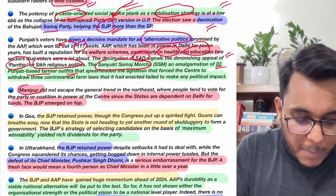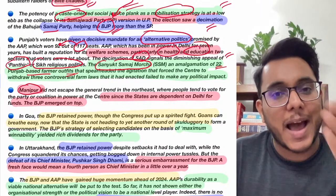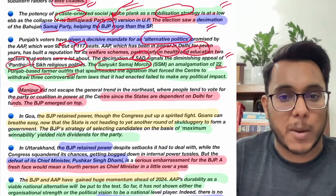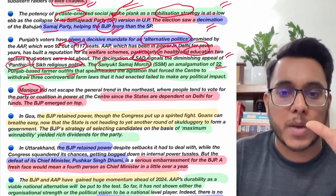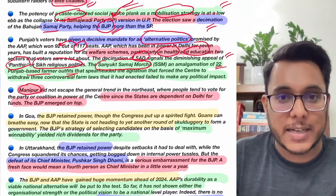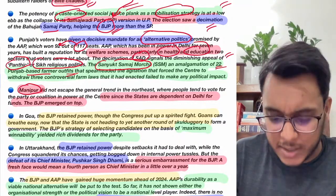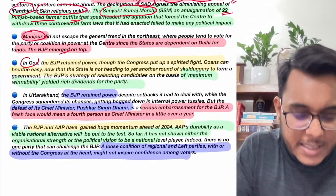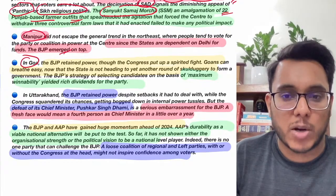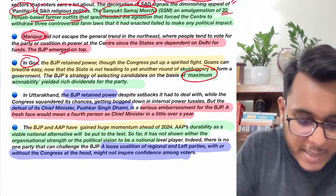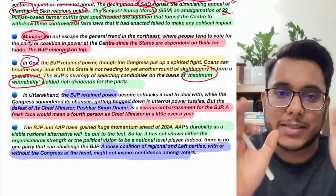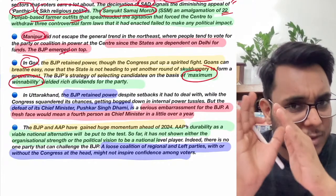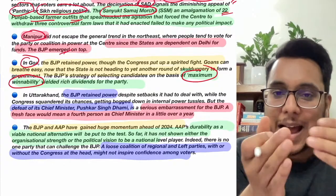In Manipur, there is a unique trend: Manipur tends to vote for the party at the center because the state depends heavily on central government grants for development. BJP got strong support there. In Goa, BJP used a 'maximum winnability formula' — carefully selecting candidates with high public appeal — and won 20 of 40 seats. This time, political instability like that seen in Goa earlier is unlikely.